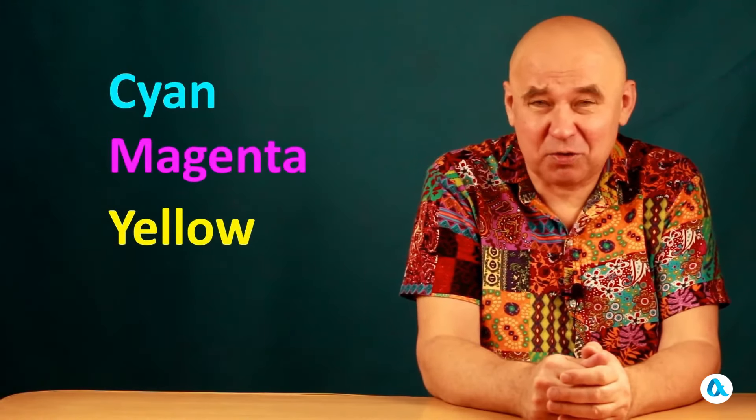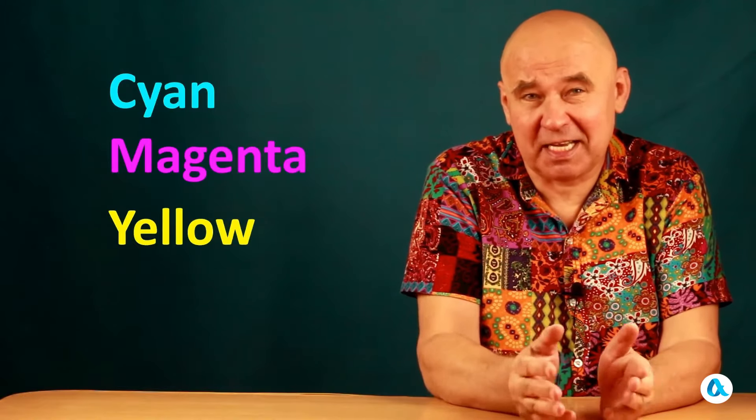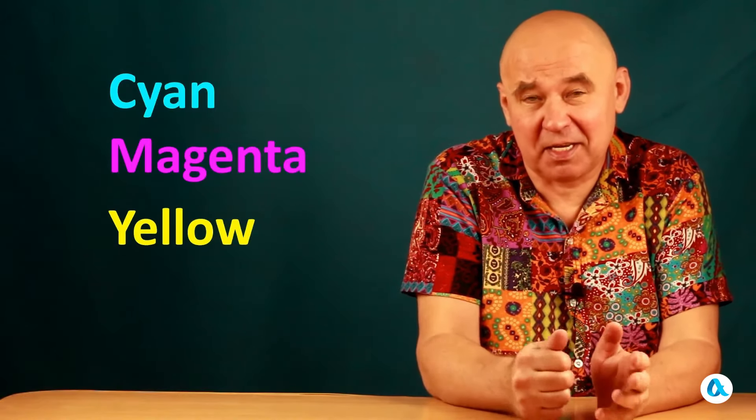Subsequent to the experiments demonstrated by Alexei, we can proceed to a color model that is based not on addition, but on the subtraction of colors as its fundamental principle. In this model, the primary colors are cyan, magenta, and yellow. And the model is referred to as CMY, which stands for the first letters of the colors.